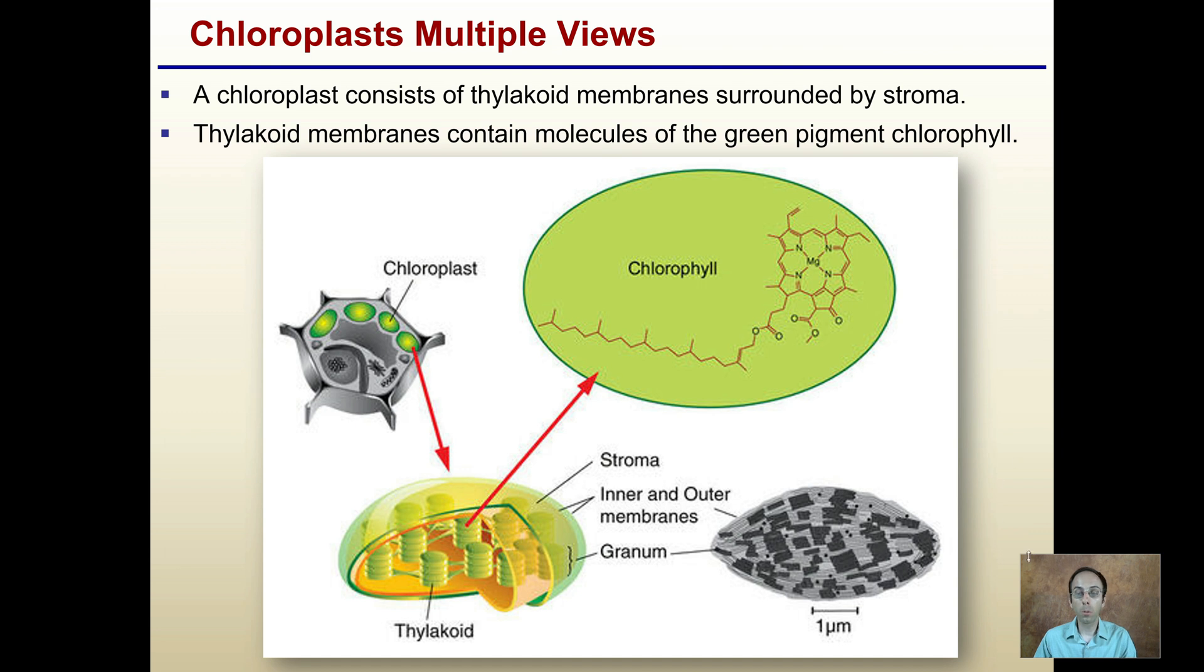The chloroplast, from multiple views here, consists of thylakoid membranes surrounded by the stroma. The thylakoid membranes contain molecules of the green pigment chlorophyll for the absorption of light. You can see in the cartoon image how they look here, kind of all stacked. This is what they look like in an actual image. We can see those really dark banding regions are those thylakoids there, stacked together forming a granum.